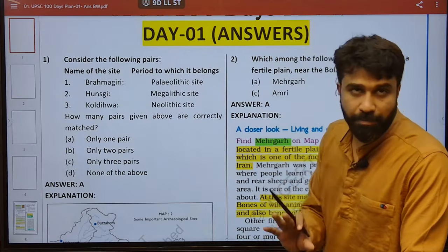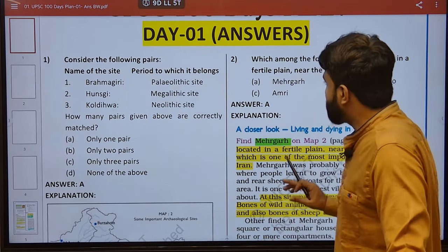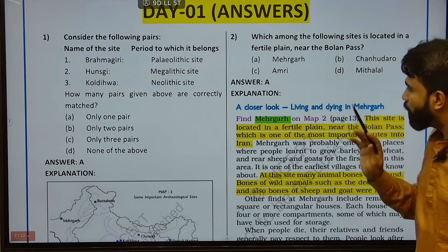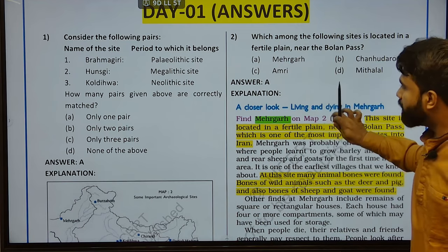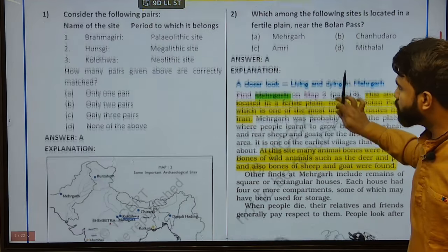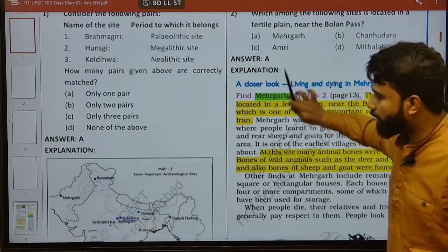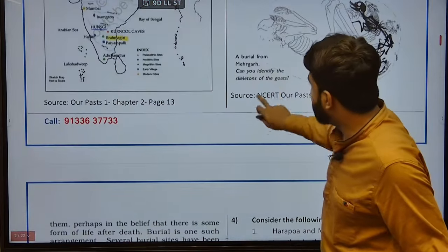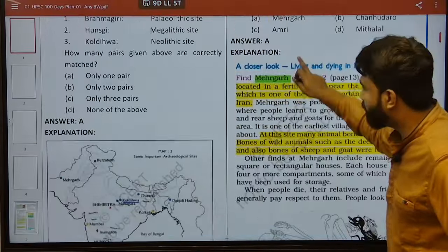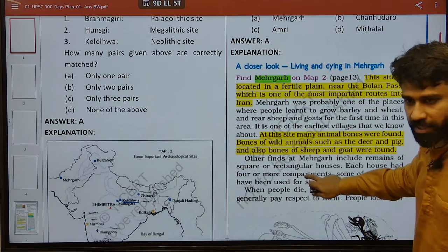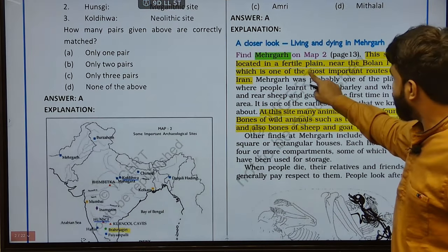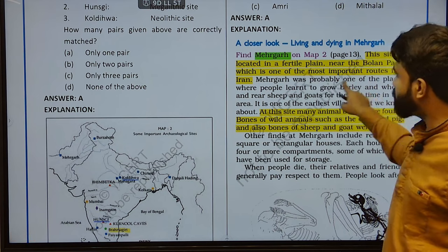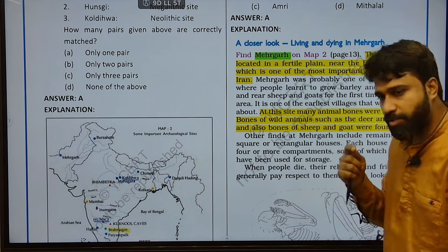For every question, I will display a map if required. Next — which among the following sites is located on a fertile plain near the Bolan Pass? It is very important that Mehergar — it is also the second question. I will display the PYQs associated with it after giving this explanation. Because Mehergar is on a fertile plain near Bolan Pass, which is one of the most important routes to Iran.